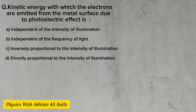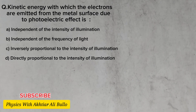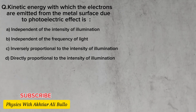The question is: the kinetic energy with which the electrons are emitted from the metal surface due to the photoelectric effect is — (a) independent of the intensity of illumination, (b) independent of the frequency of light, (c) inversely proportional to the intensity of illumination, (d) directly proportional to the intensity of illumination.